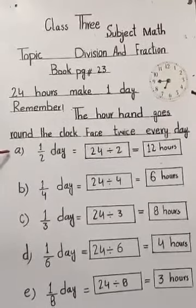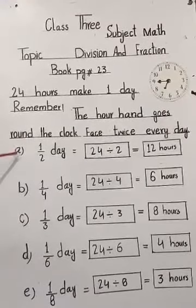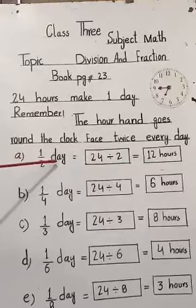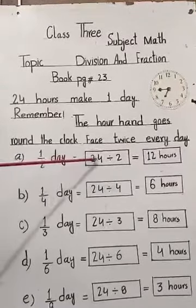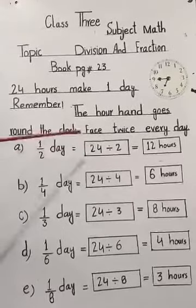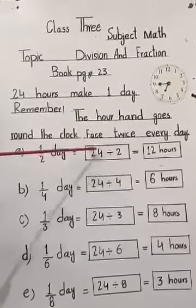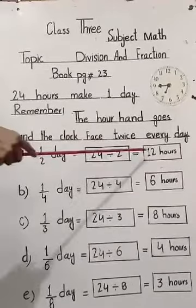Question number A, part A. 1 over 2 days. Days mean 24 hours. It means 24 divided by 2. 2, 1 is 2, 2 twos are 4. 12 hours.